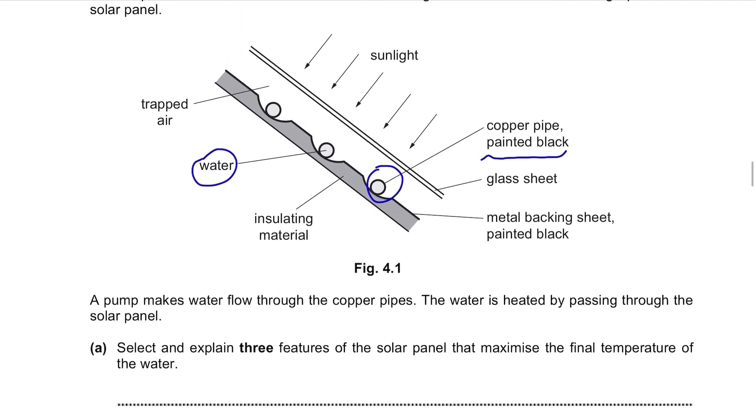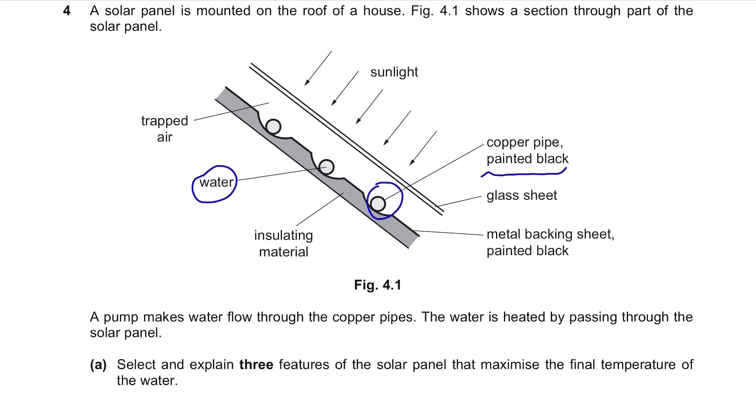We need to write the features that help increase the temperature of the water. Well, there are plenty here to write about. First one is that the pipe is made of copper which is a good conductor of heat. So it will absorb a lot of heat from the sun. Also it is painted black which is a good absorber of heat. Then there is the insulating material which prevents heat loss and the glass or air will reduce the warm air being blown away and make use of it.